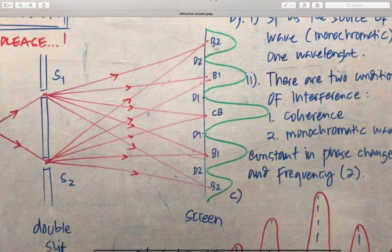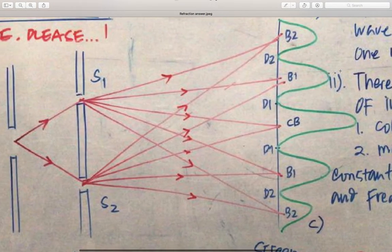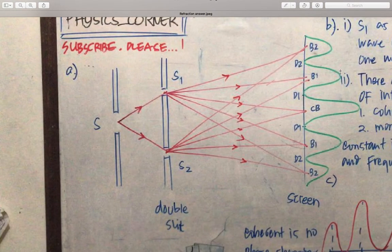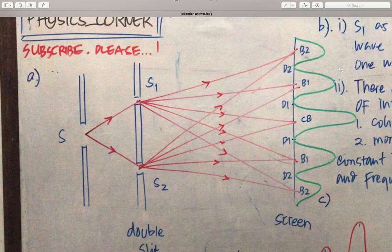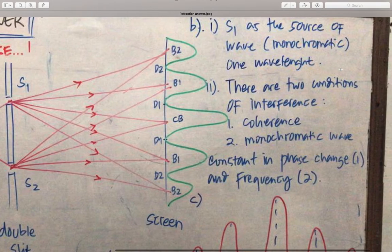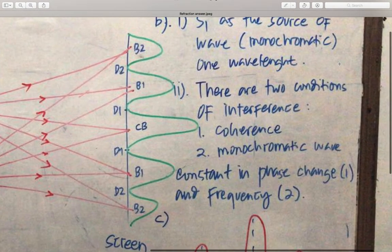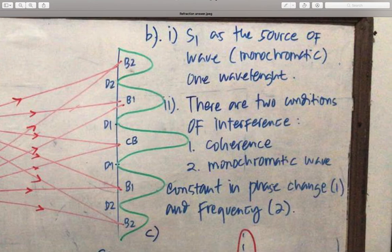Answer to Question A. Answer to Question B: S as the source of light is monochromatic or one wavelength. There are two conditions of interference.